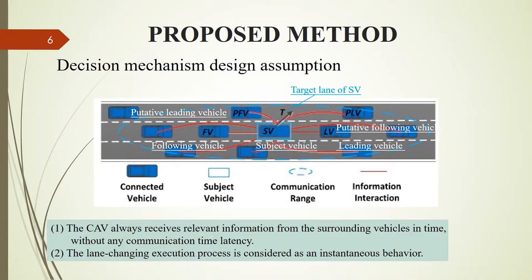The subject vehicle, leader vehicle, and following vehicle are denoted with SV, LV, and FV. The target lane of SV is denoted with T. The potential leader vehicle and the following vehicle of SV in T is denoted with PLV and PFV. In addition,